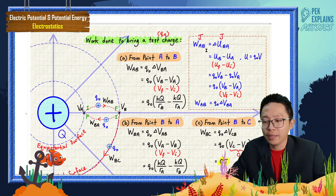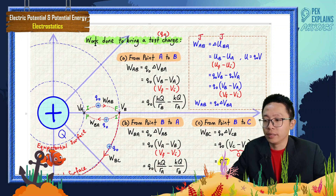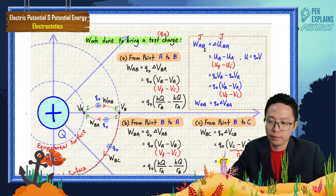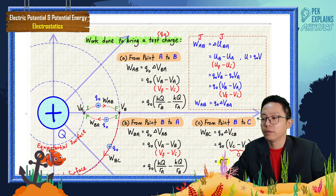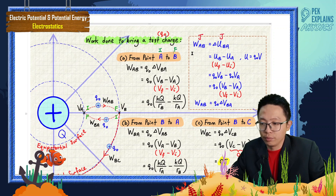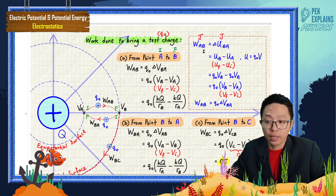What is meant by work done A-B? W_ab means the work done to bring a test charge from point A to point B. Here, A is initial and B is final — so it starts from A and goes to B.